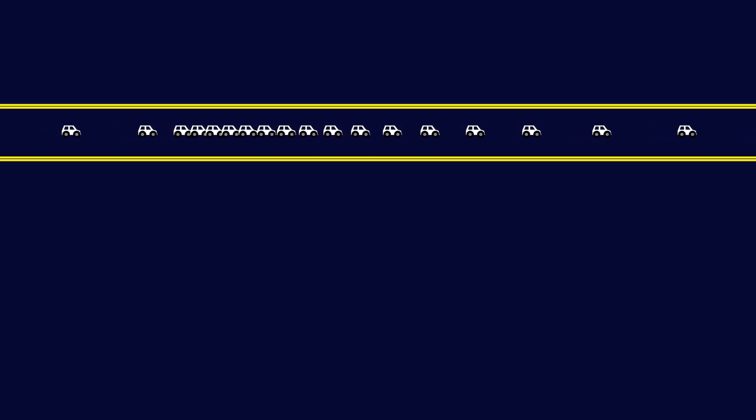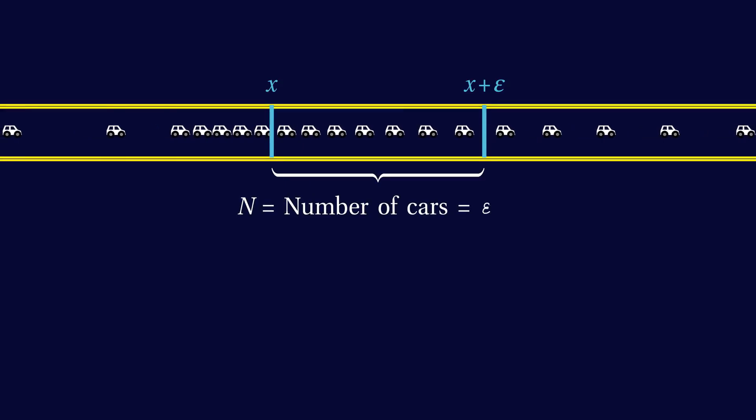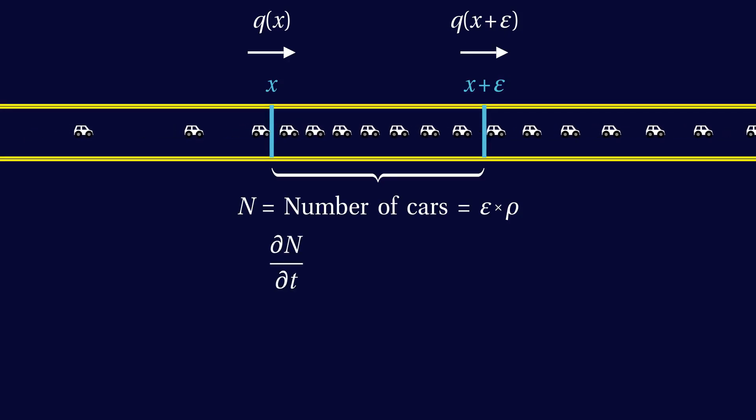To start the derivation, consider a short stretch of road, say between coordinates x and x plus epsilon. The total number of cars in this interval is approximately given by the length of the interval, which is epsilon, times the density rho at x. The number of cars going into this interval per unit time is given by the flow q at x, and the number of cars leaving the interval in the same unit of time is the flow q at x plus epsilon. So the change in the number of cars n over time is given by the difference in flow at x and at x plus epsilon.